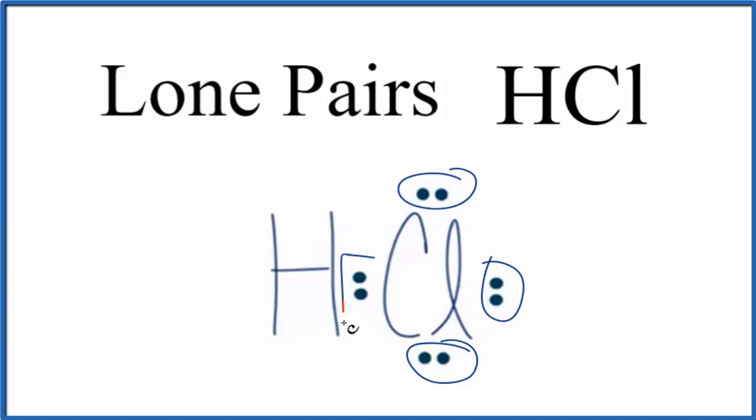For the pair of electrons that's between the hydrogen and the chlorine, that's covalently shared. This is a bonded pair of electrons. It's shared, it forms the chemical bond.